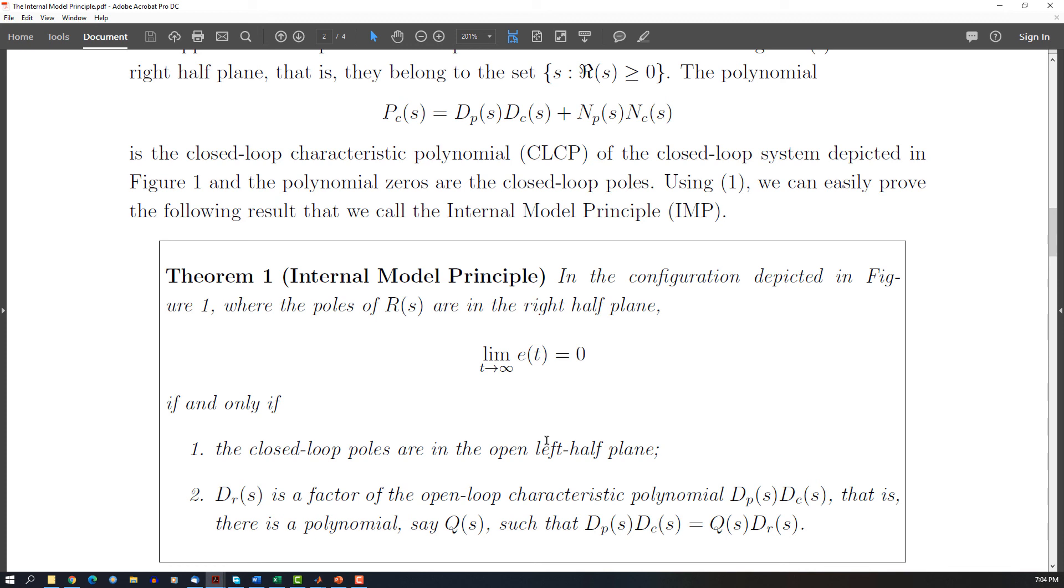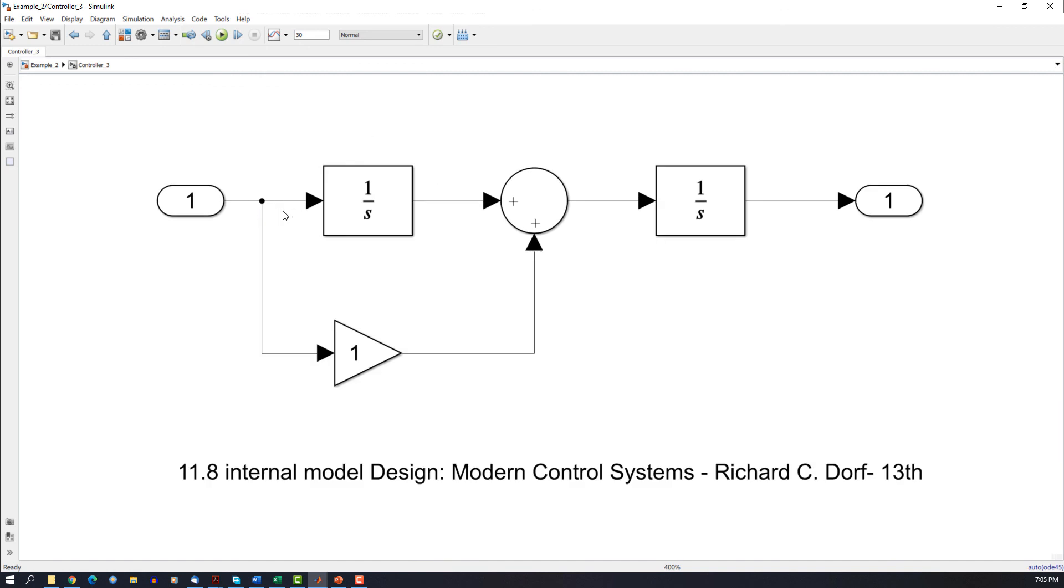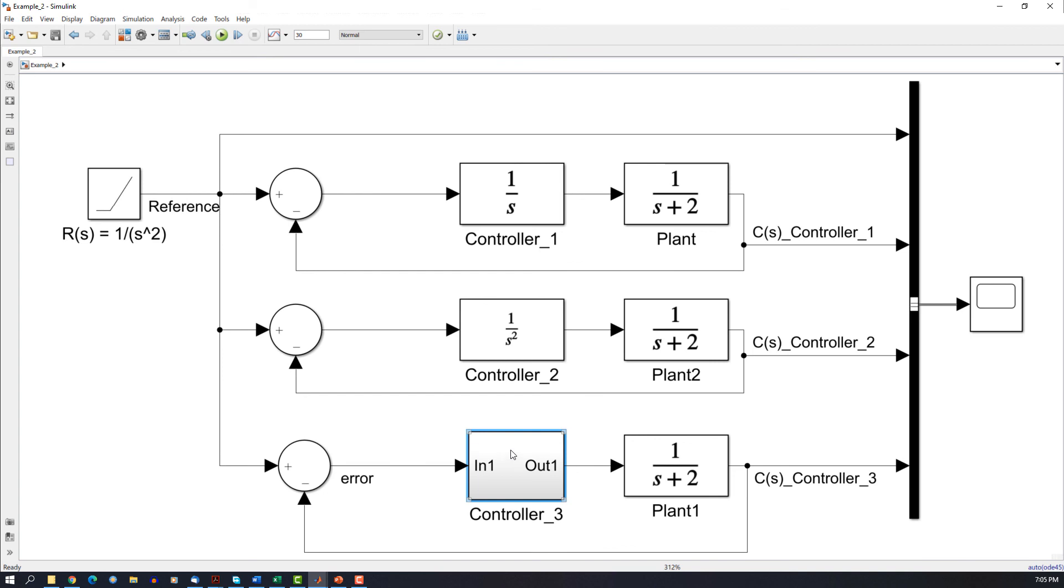So that's why the PI control is so popular in practical applications. And also, even with the reference as a ramp, as in this case, you can use a double loop of PID, which is here only PI with an I, to create a controller which is able to track reference like this.